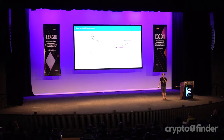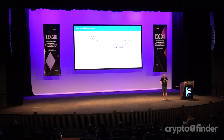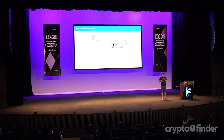So what is the data availability problem? Basically, you have data, and you can reference that data with some sort of identifier which is succinct, like a 32-byte hash. And the question is, if you're only given the hash and you don't have the data, is the data available to you? Can you actually go ahead and download it?